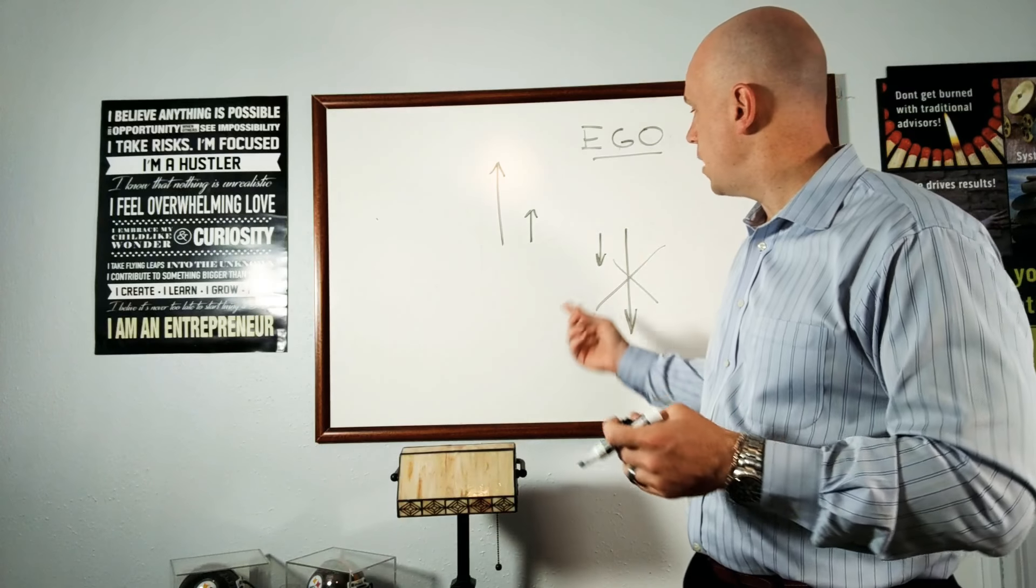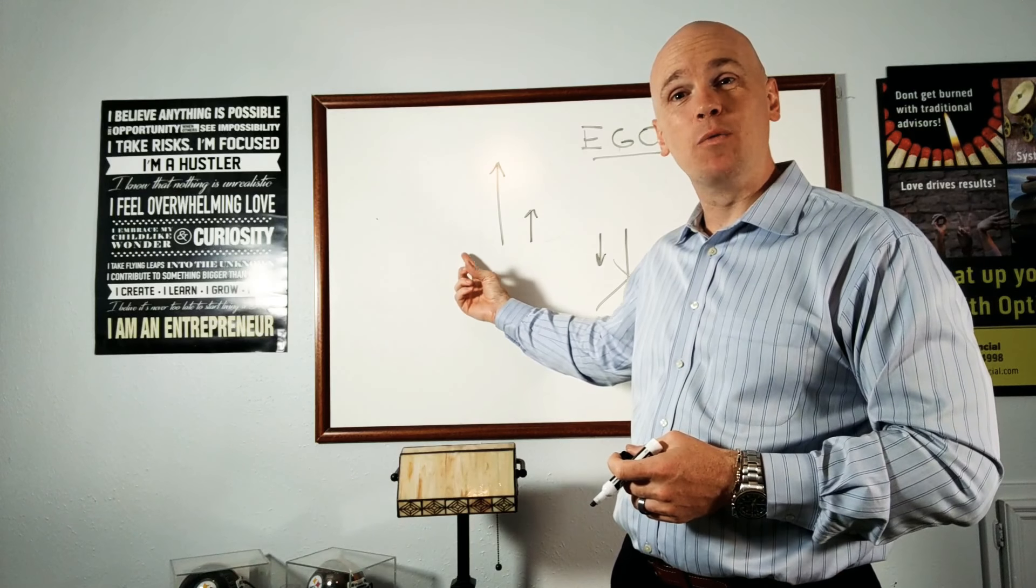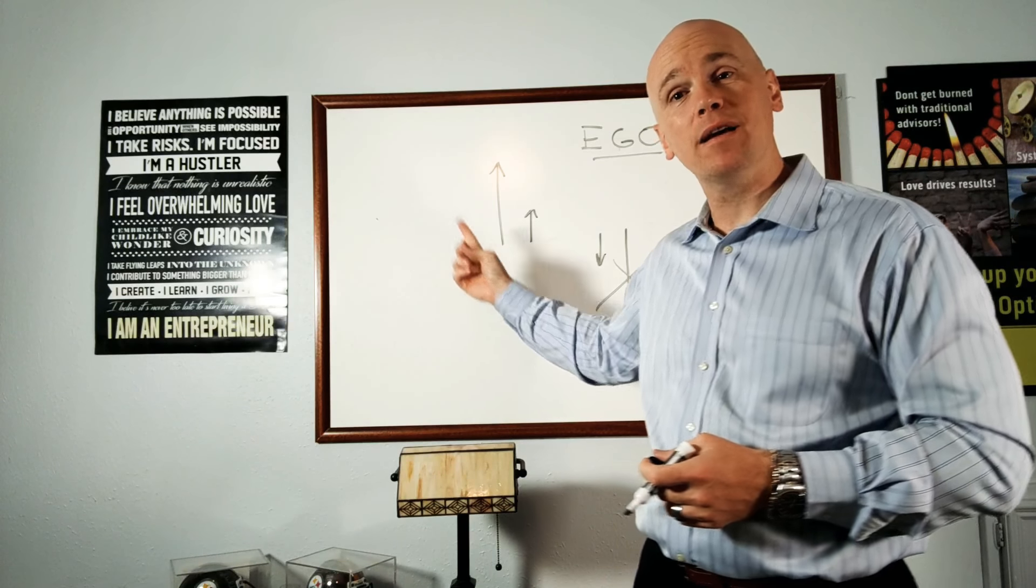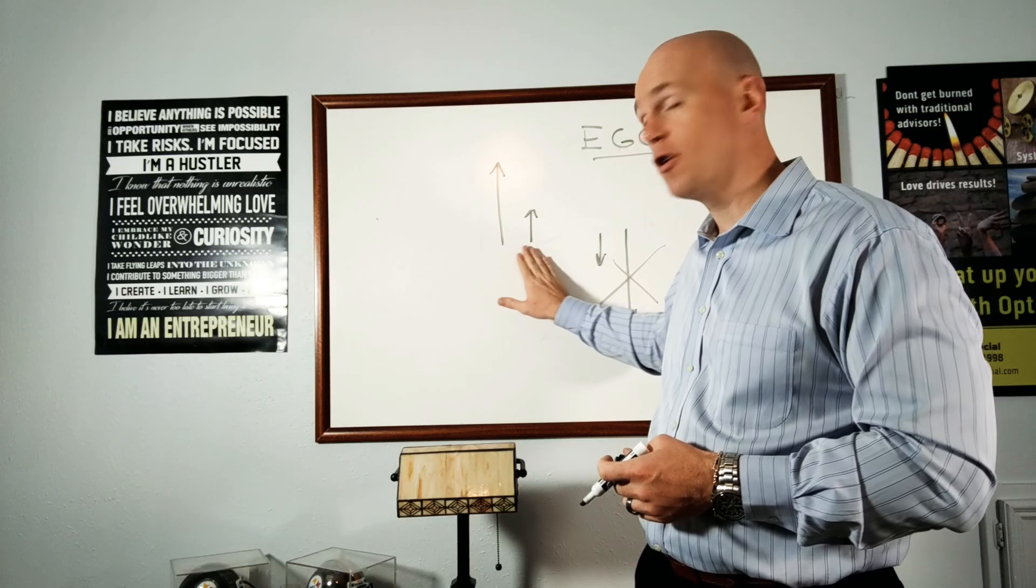By eliminating the big losers, what you now have is small winners and small losers and big winners. And the big winners are what really propels your account. Now, the key is that you have to have a plan ahead of time to allow these to turn into these.